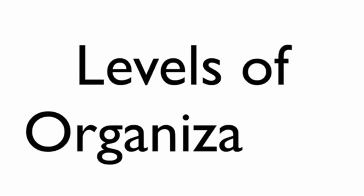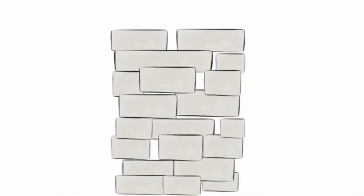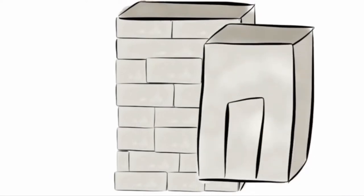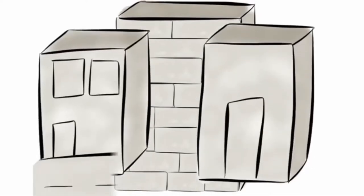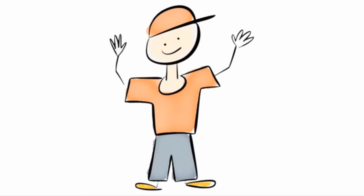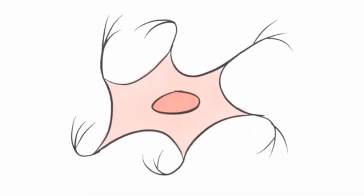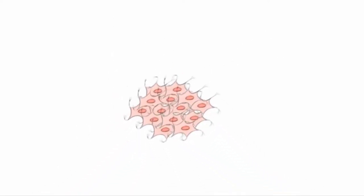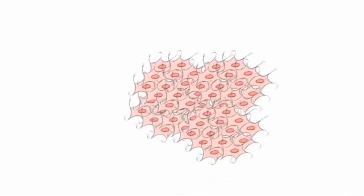Levels of Organization. When building a city, you start with bricks. Many bricks joined together make a wall. Walls working together make a building, and many buildings complete the city. The human body is put together in a similar way. Humans start with cells; many cells joined together make tissue; tissue working together makes an organ; and many organs make an organ system.